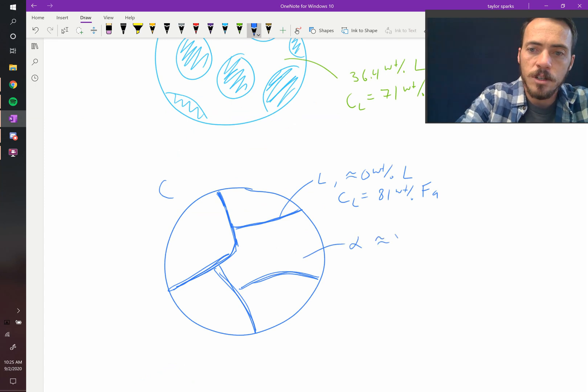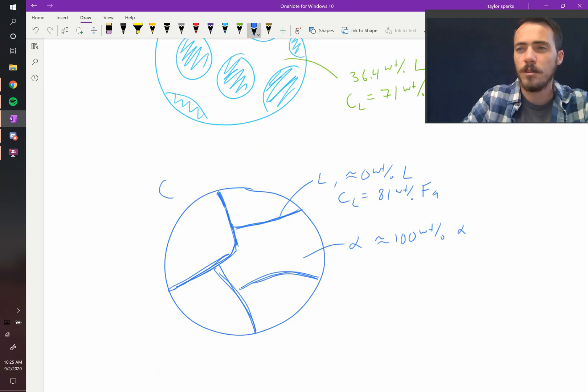Then this is going to be the olivine alpha. And it is essentially 100% weight percent of solid. Like there's only a tiny bit of liquid left because we're just above that solidus line. And the composition of that solid was 50 weight percent phthalite.